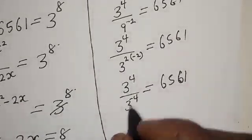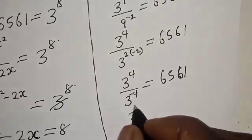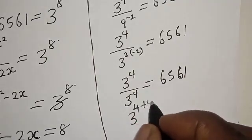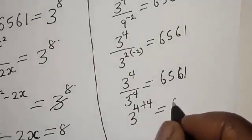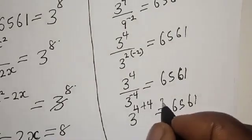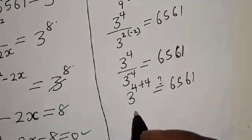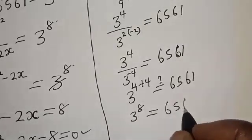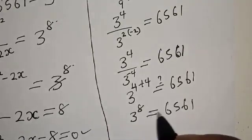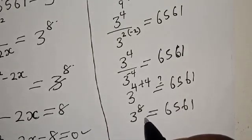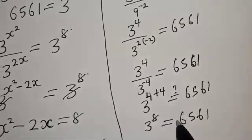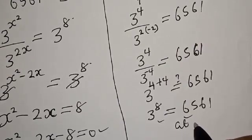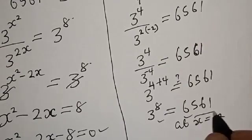Since the minus 4 in the denominator moves to the numerator as plus 4, we have 3 raised to power 4 times 3 raised to power 4, which is 3 raised to power 8, and 3 raised to power 8 is equal to 6561. This means the left-hand side equals the right-hand side, which satisfies the given equation at S is equal to minus 2.